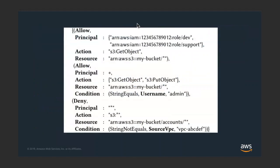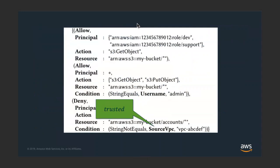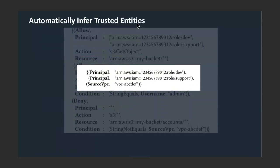Let's look at an example of what we mean by untrusted entity. The username 'admin' is an untrusted entity because anybody can create a username admin in their account. But the source VPC ABCDE is a trusted entity because its value is based on an identifier of your private network, and it's set by the system. Our insight is that we can automatically infer the trusted entities from the policies themselves, though coming up with a precise definition requires significant domain expertise.